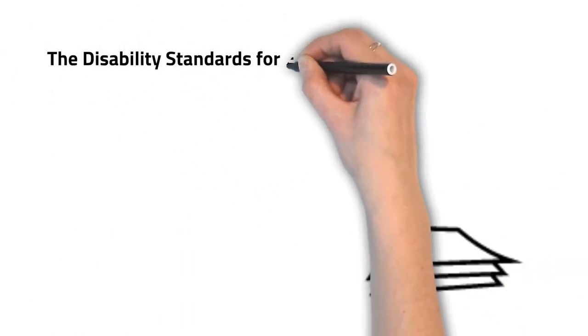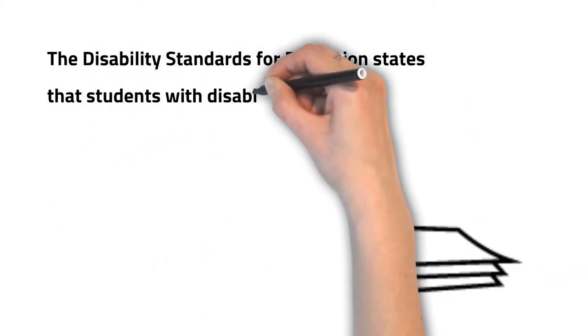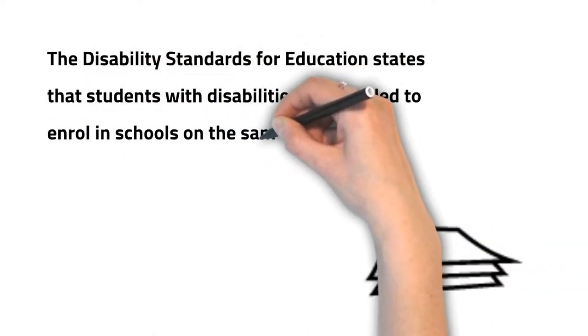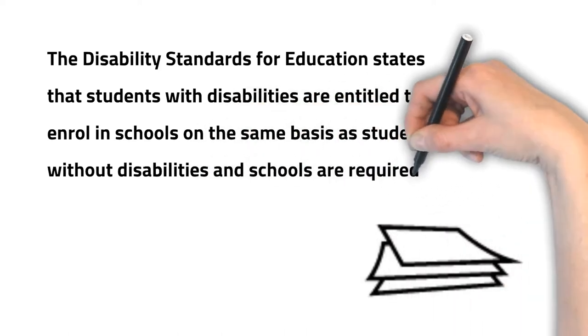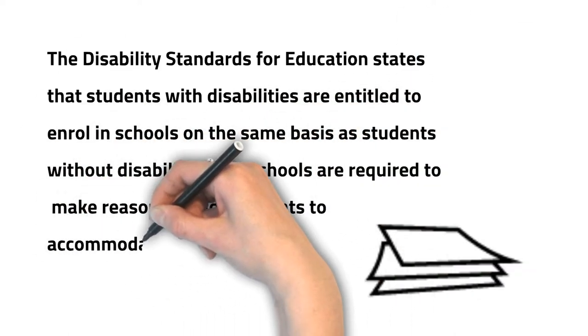The disability standards for education states that students with disabilities are entitled to enrol in schools on the same basis as students without disabilities and schools are required to make reasonable adjustments to accommodate the students' needs.